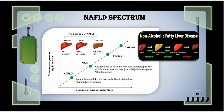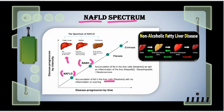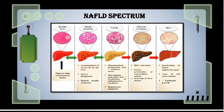We can better understand the spectrum of non-alcoholic fatty liver disease from this diagram. Here we can see that NAFLD begins as only accumulation of fat in the liver cells, which can progress towards NASH — non-alcoholic steatohepatitis — where fat accumulation and inflammation are both present. It can further develop into fibrosis, and ultimately into cirrhosis with scarring of the liver cells.